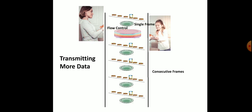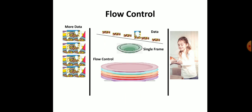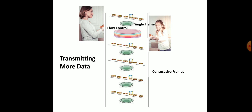Why exactly is flow control required? Flow control is required to transmit all the data the ECU or tester wants to send. Here the tester is the transmitter and the ECU is the receiver, though in some cases it can be reversed. Flow control is required to transmit more than one frame — that is, for sending consecutive frames you need flow control to be transmitted. More than seven or eight bytes of data requires multiple frames.